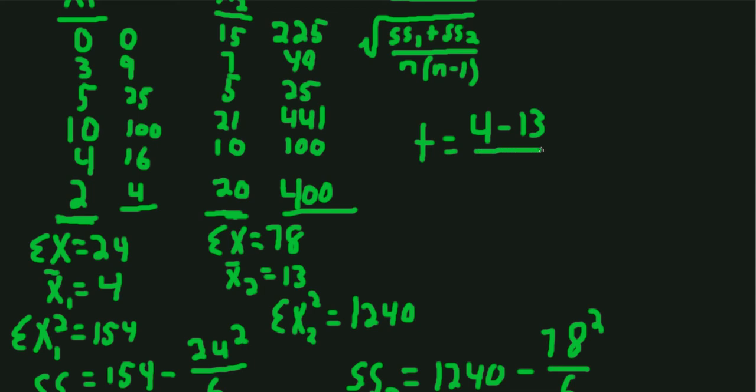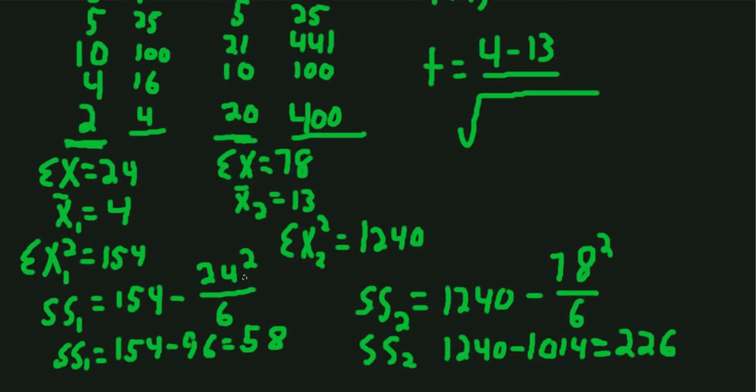And then in the denominator, we add the two sum of squares together. So that's 226 plus 58 over n times n minus 1, which here is 6 times 5, which gives us 30.